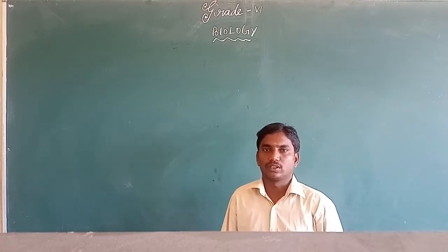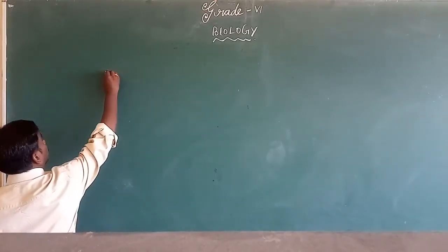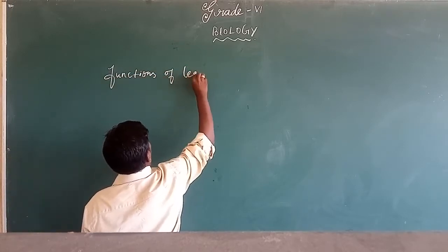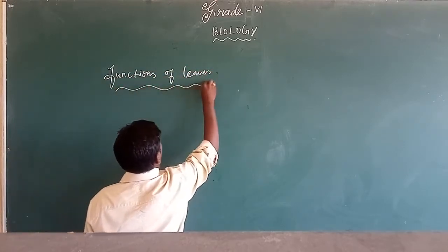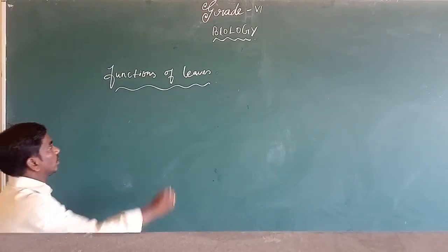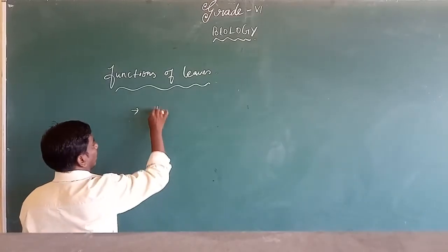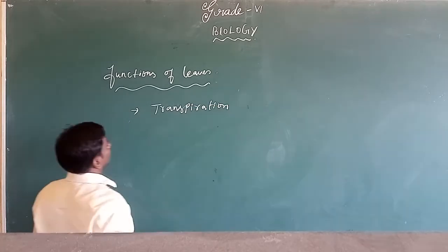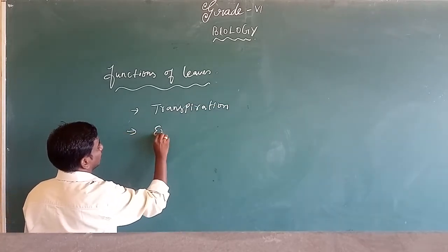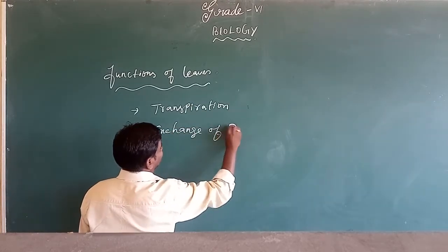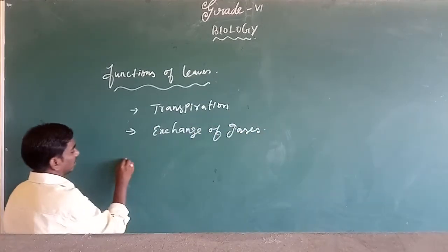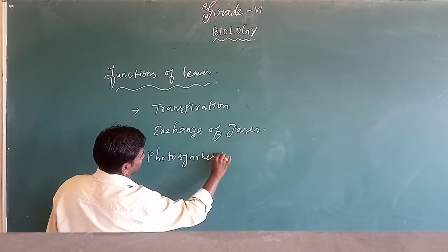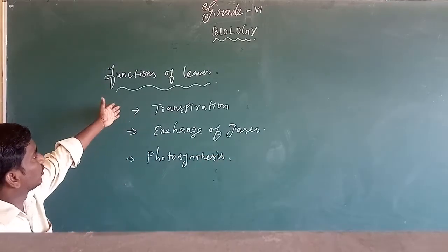Today we are going to talk about the functions of leaves. The three main functions of leaves are: first one, transpiration; second one, exchange of gases; and third one, photosynthesis. So those are the three main functions of leaves.